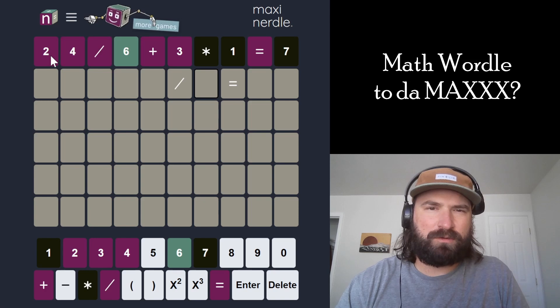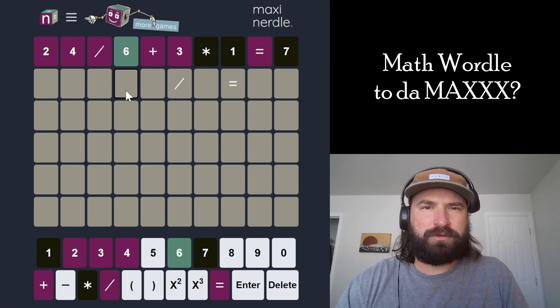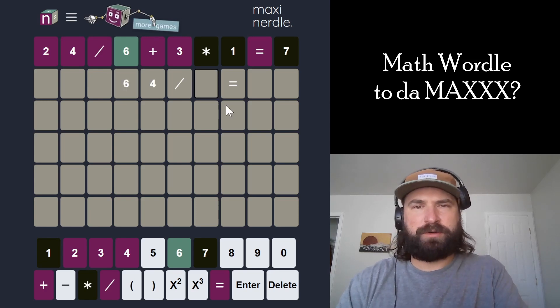Unless I do like 60-something divided by 2, which is not unreasonable, honestly. If I did 64 divided by 2, that's 32. Yeah, actually that fits pretty nicely.